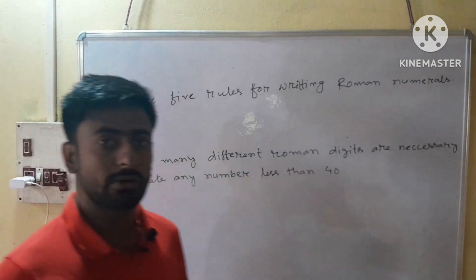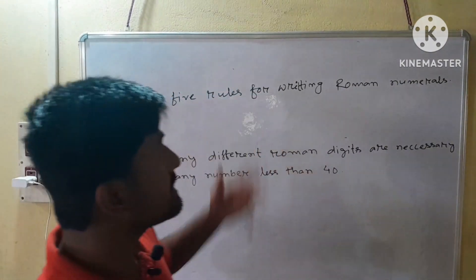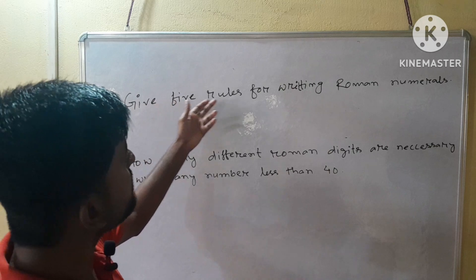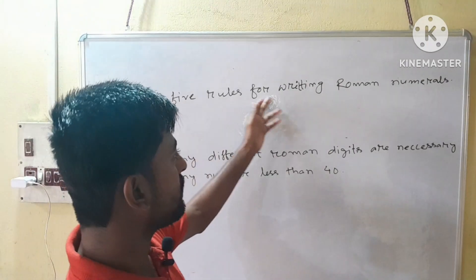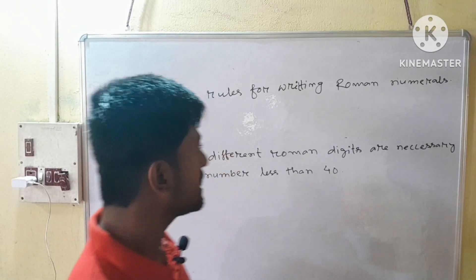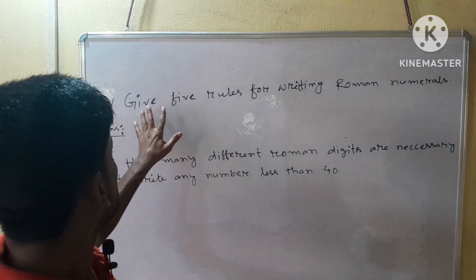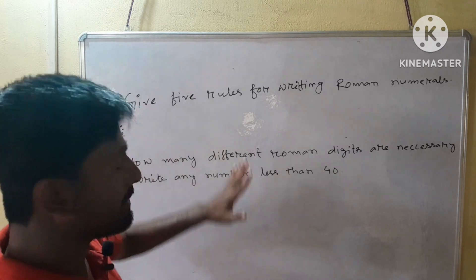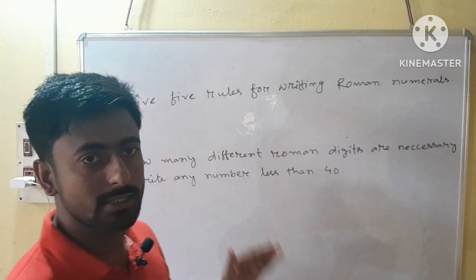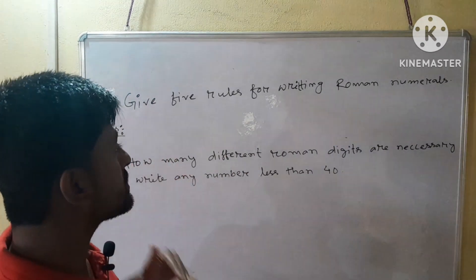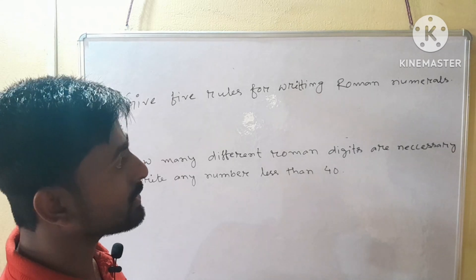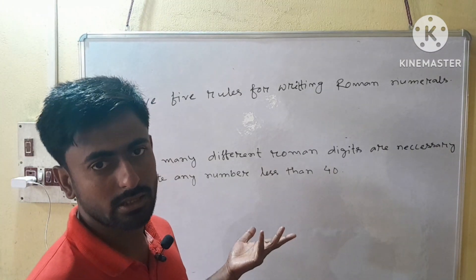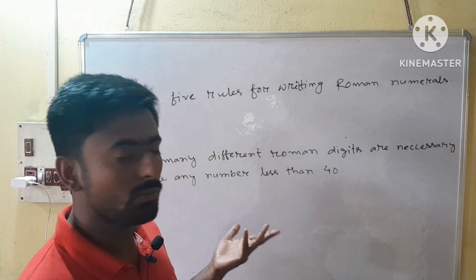Our next question is question number 6. In question number 6 we have to give 5 rules for writing Roman numerals. This has already been given in lecture number 1 — we gave 6 rules for writing Roman numerals there. So you can see lecture number 1.